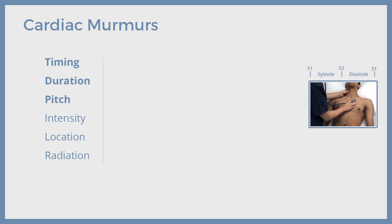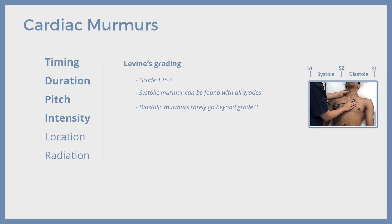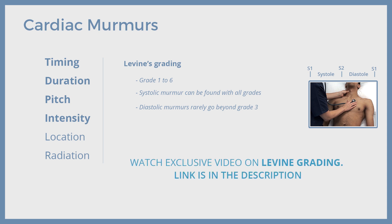Let's proceed to the next feature — murmur intensity. Levine's grading classifies murmur intensity into six grades, from grade one being a faint murmur audible only on careful listening in a quiet environment, to grade six being the loudest, heard even with a stethoscope just lifted off the precordium. All grades can be found in systolic murmurs; however, diastolic murmurs' intensity rarely goes beyond grade three. For grading of murmurs, please check out our video on this topic.